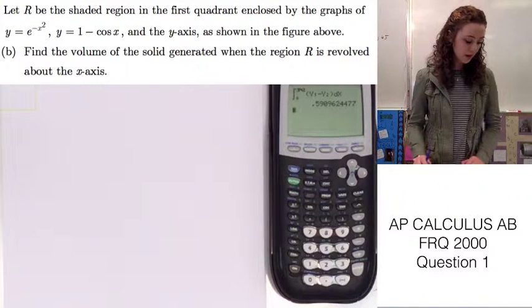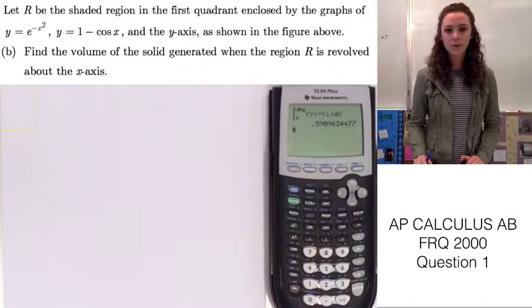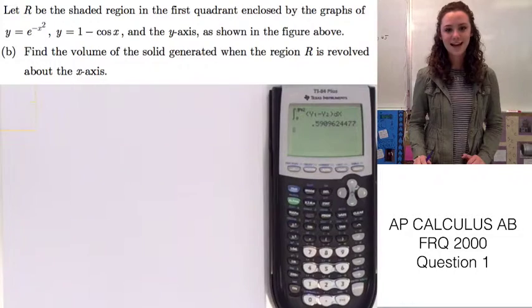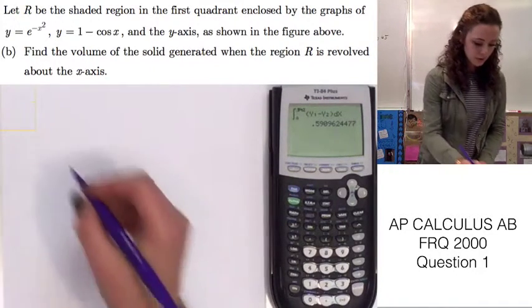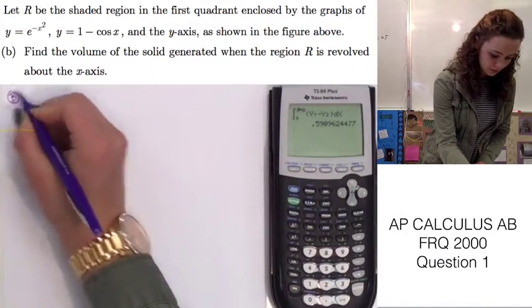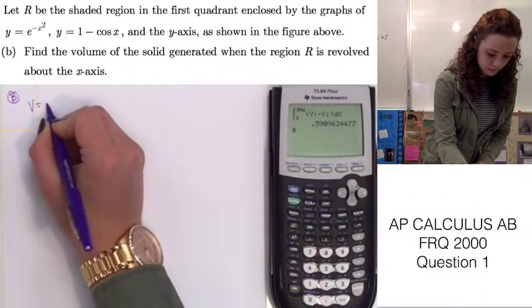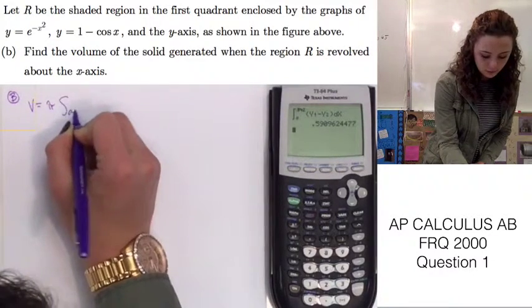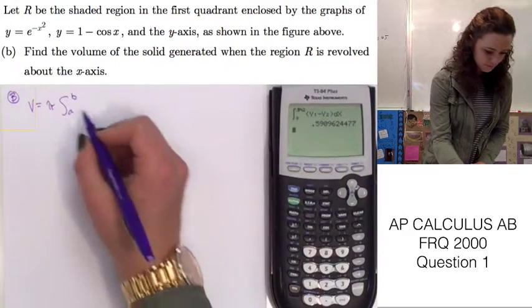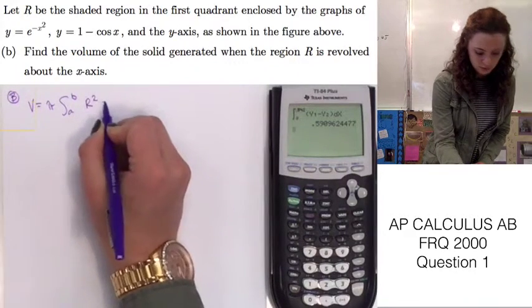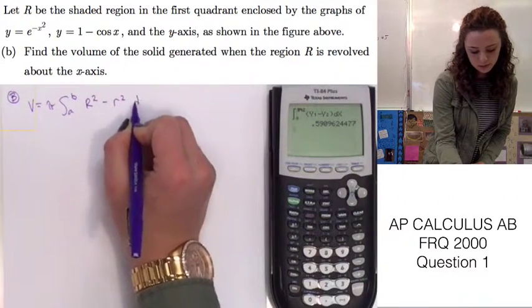By looking at the graph we can tell that there's going to be a hole in the middle, so we're going to have to use the disk method. The formula for that is the volume is equal to pi times the integral of the lower limit to the upper limit of R squared minus little r squared dx.